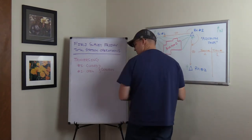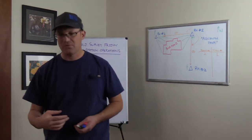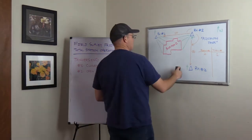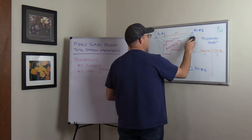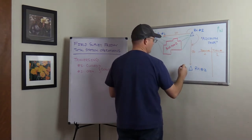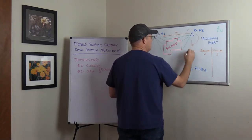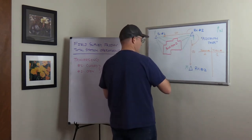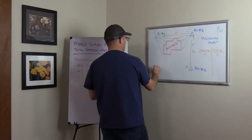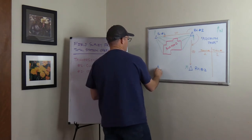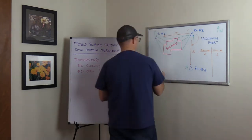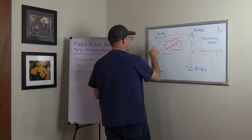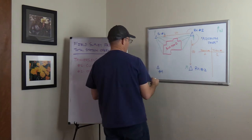Now we're going to move up. We move our instrument up to three. Now we're going to backsight two with our rod. We come over here and we set another point. Now it's important — because we want to close the traverse — it's important that when we set RH number four, we can see it from both three and one, or we're not going to be able to close out our traverse.